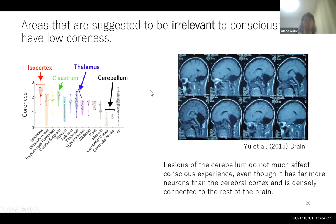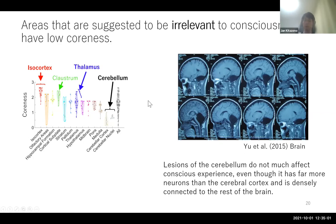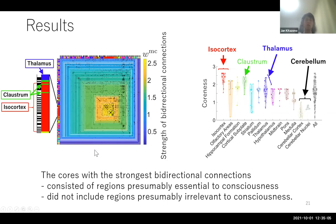Another interesting result is that areas suggested to be irrelevant to consciousness have low coreness values. For example, cerebellum takes a very small value. Previous clinical studies have shown that regions of the cerebellum do not much affect conscious experience, even though it has far more neurons than the cerebral cortex and is densely connected to the rest of the brain. So these results indicate that the core complexes with the strongest bidirectional connections consist of regions presumably essential to consciousness, and did not include regions presumably irrelevant to consciousness.